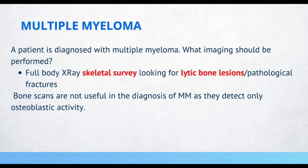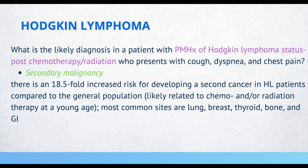What is the likely diagnosis in a patient with a past medical history of Hodgkin lymphoma who underwent chemotherapy and radiation and now presents with cough, dyspnea, and chest pain? A secondary malignancy. Patients treated for Hodgkin lymphoma have a considerably higher risk of developing a secondary cancer compared to the general population. The most common sites for secondary malignancy include lung, breast, thyroid, bone, and the GI system.